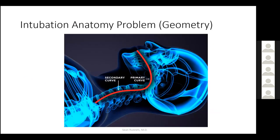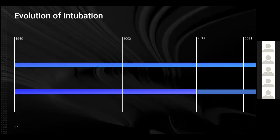Intubation geometry — this is what we have to overcome. There's a primary curve and a secondary curve, and importantly they are in opposite directions, with the inflection point at the vocal cords.